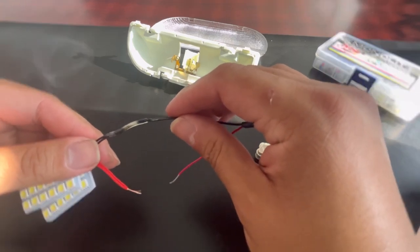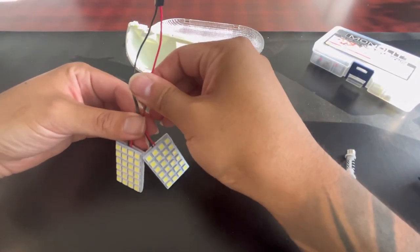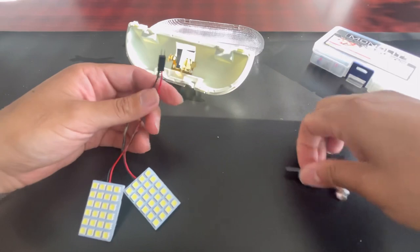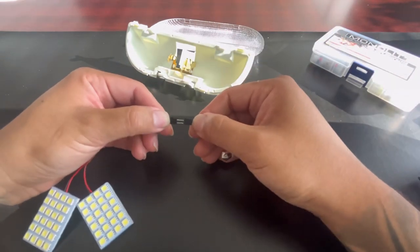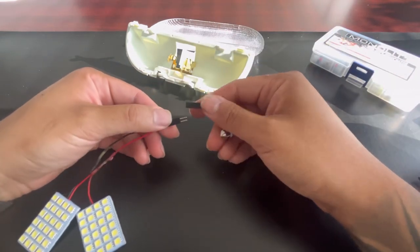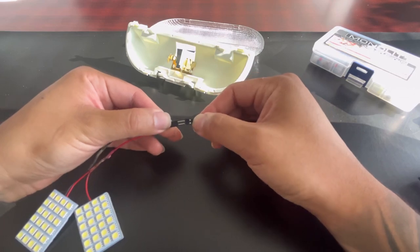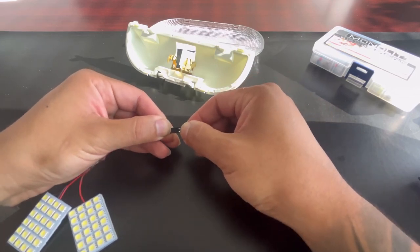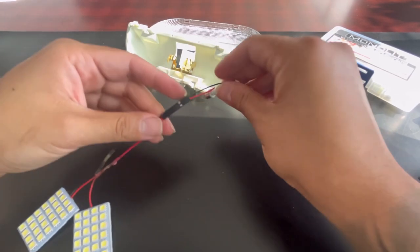After you make both connections on both sides, all you have to do now is get this piece connected. Basically follow it - red with red, black with black, like that.